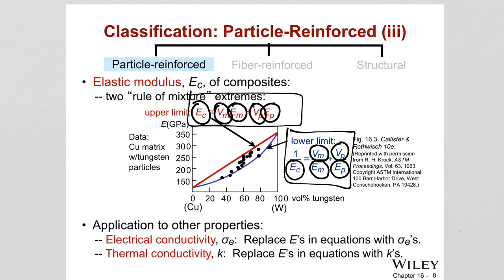I will not go into the derivations of these equations, but you can look them up online. Just like for modulus, you can apply this technique to any other property like electrical conductivity or thermal conductivity — just replace modulus with the respective property. These are theoretical limits, the extremes of max and min that data points can have; actual results come from experiments.